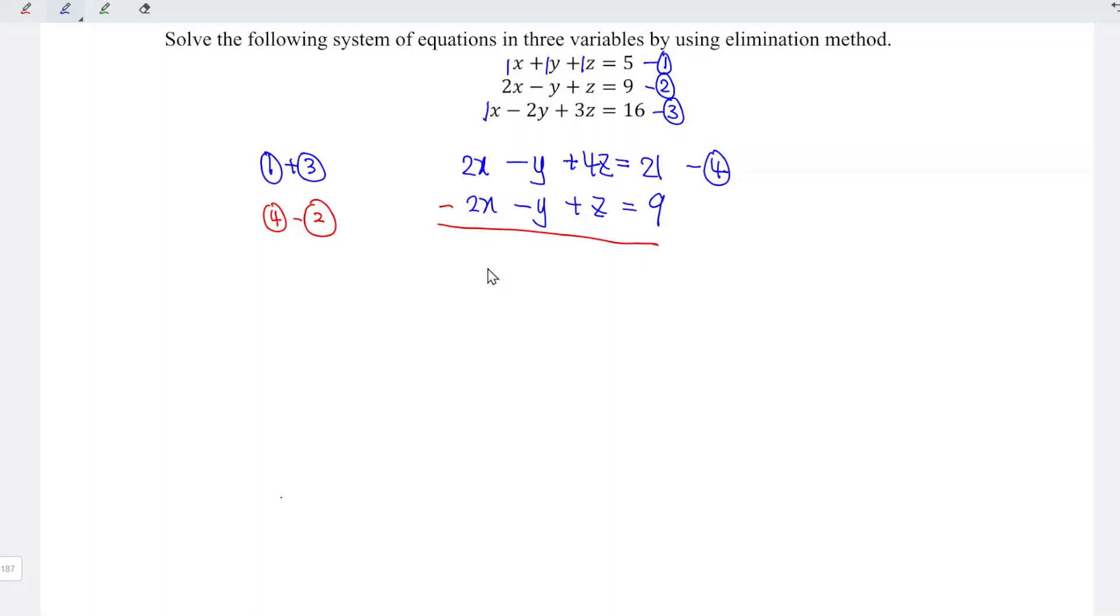So 2x minus 2x, we obtain 0. Minus 1y minus minus become plus. So which means that we should have minus 1 plus 1 offset each other. And we should be left with only the z term. So 4z minus 1z, which is equal to 3z. And this is equal to 21 minus 9, which is equal to 12.